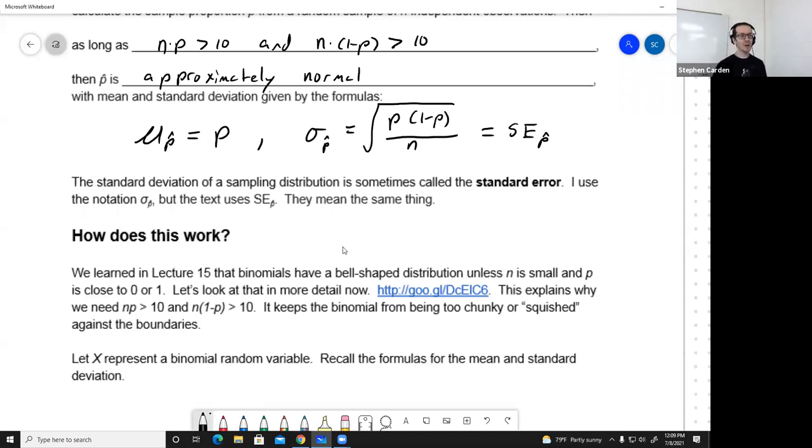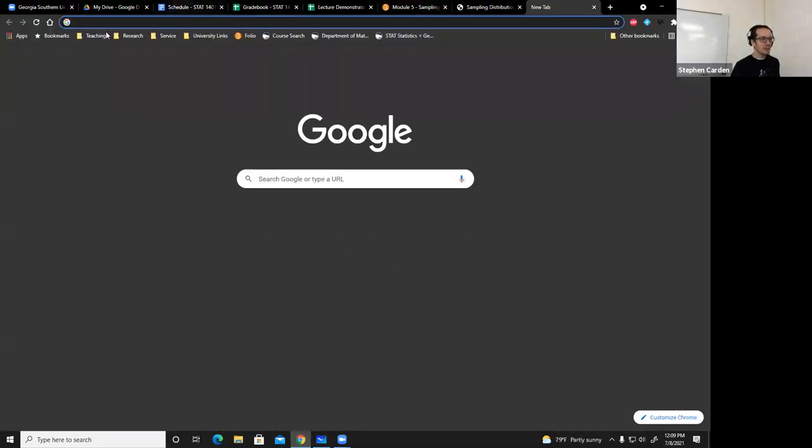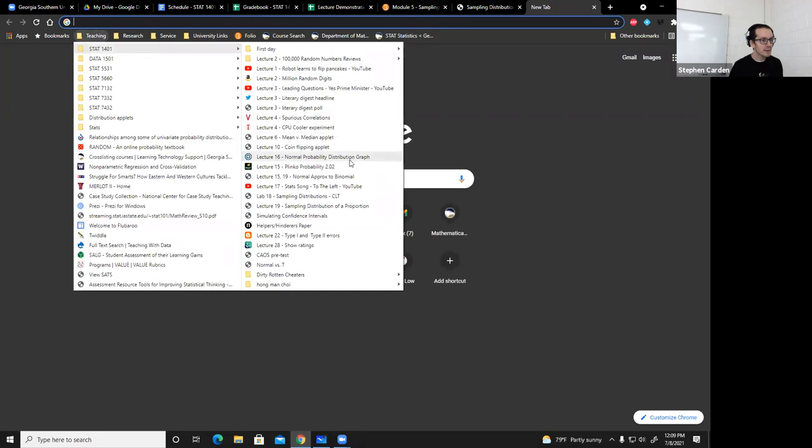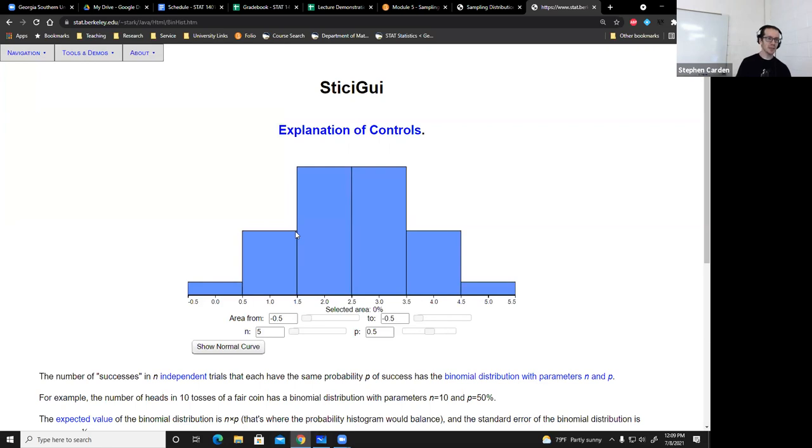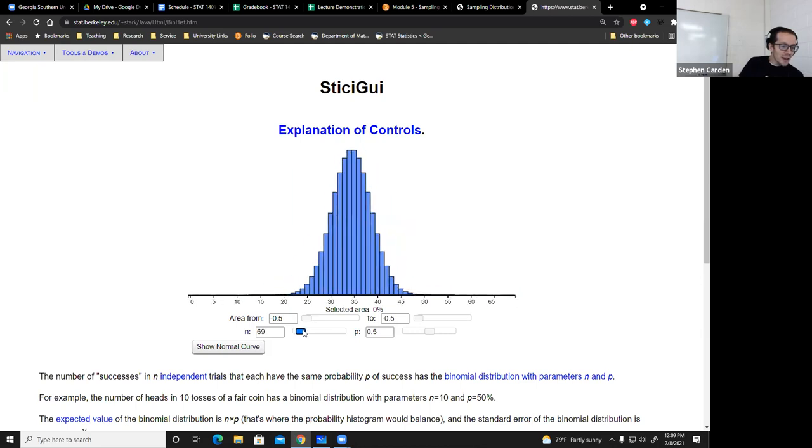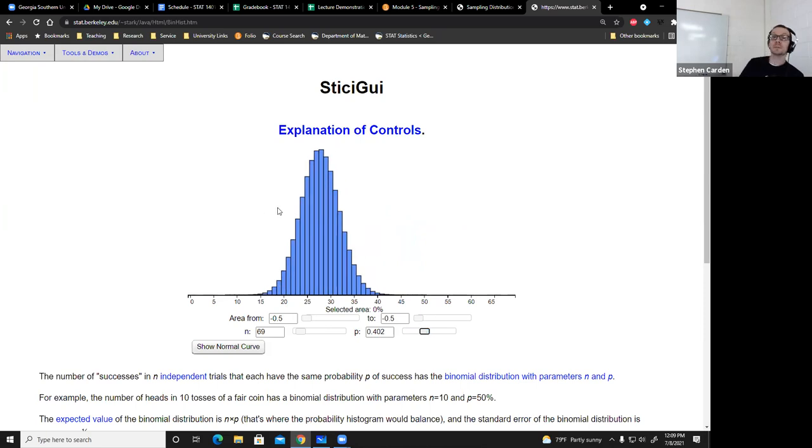Another question, why do we have to meet these two conditions up here to say p-hat is approximately normal? Well, for that, I'm going to go to an applet that I think we've already seen earlier in the class. Okay, here, normal approximation to binomial. Let's think about binomials for a minute. We saw that as long as n is large and p is not too extreme, that looks a lot like a normal, right? And I can click this thing to show the normal curve, and they match up very, very well.